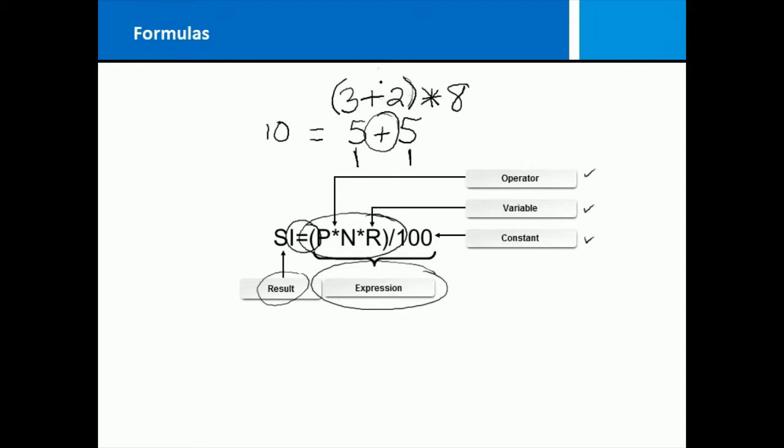So that's going to happen first. That results in 3 plus 2, 5 times 8, 5 times 8 equals 40. So you have your result, you've got your equal sign and then you've got your formula.